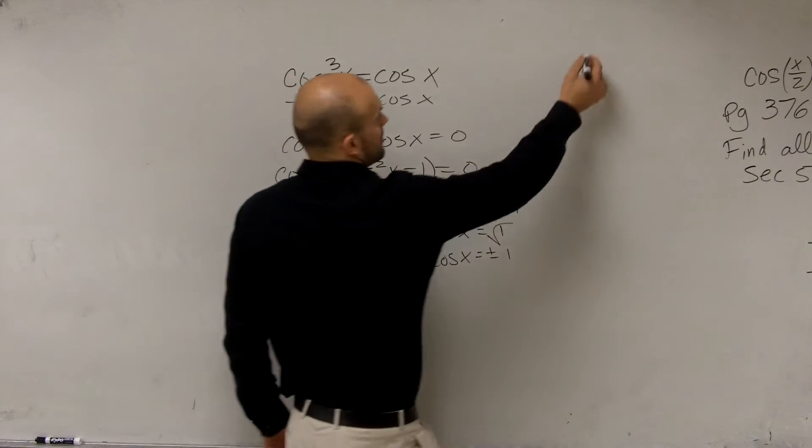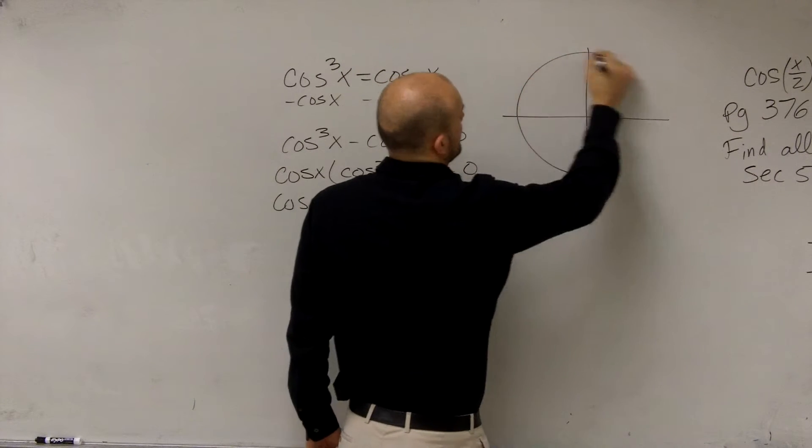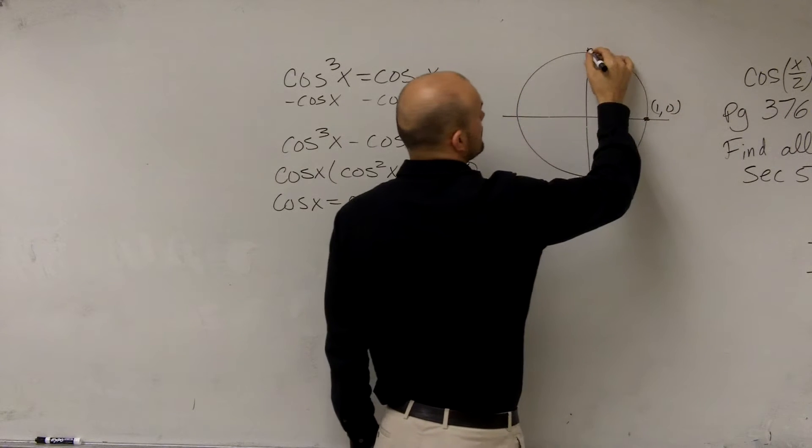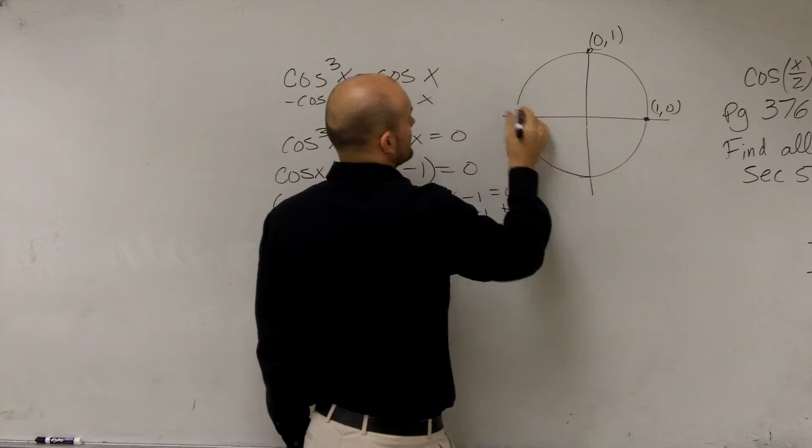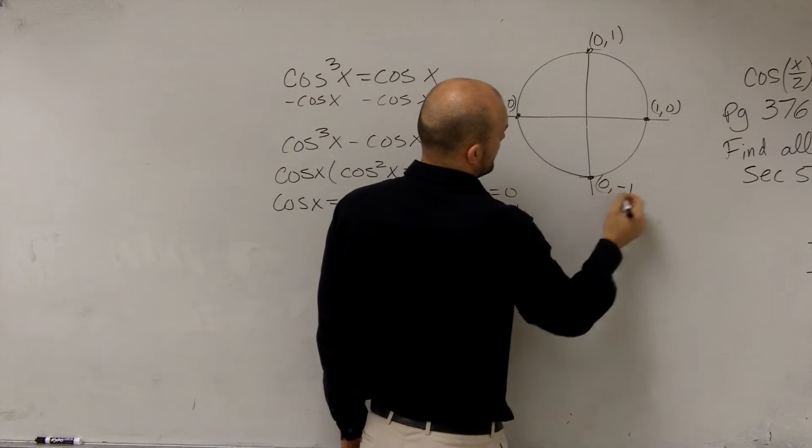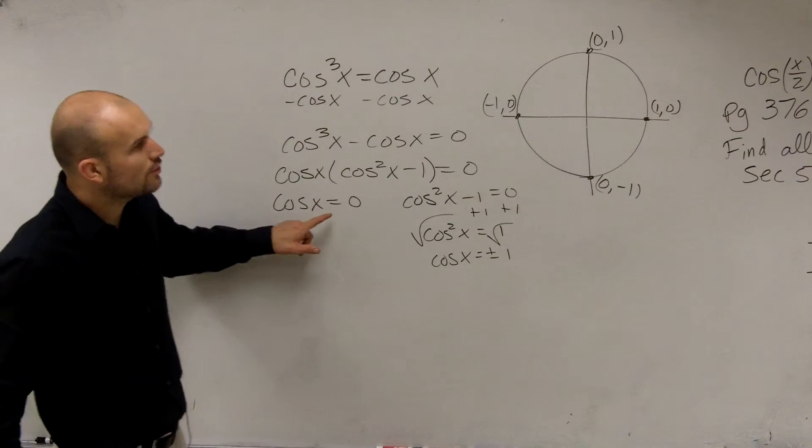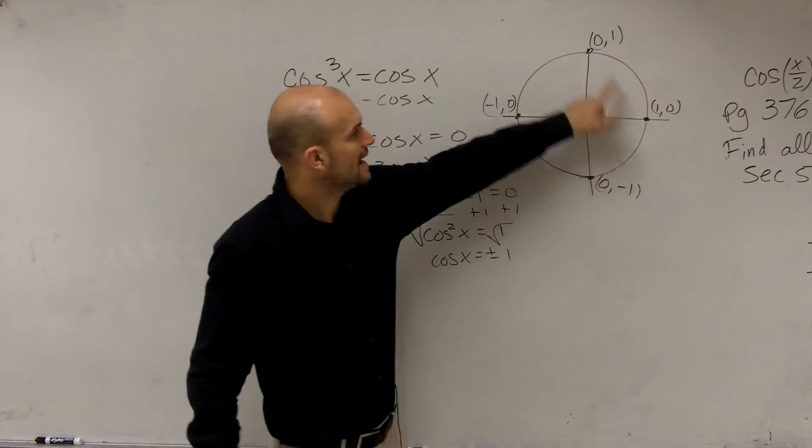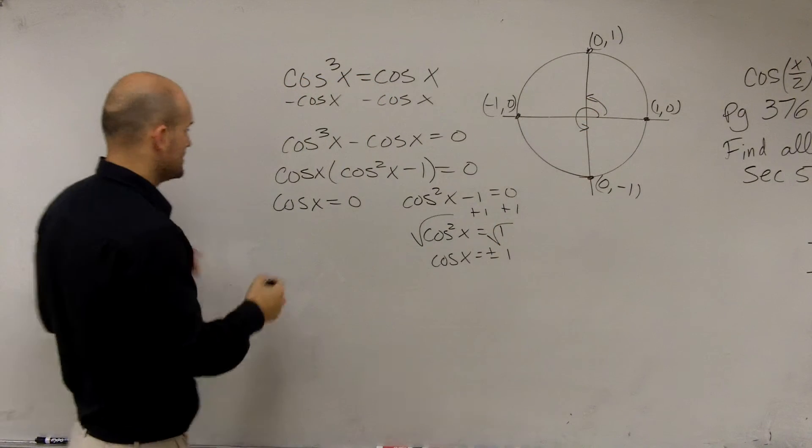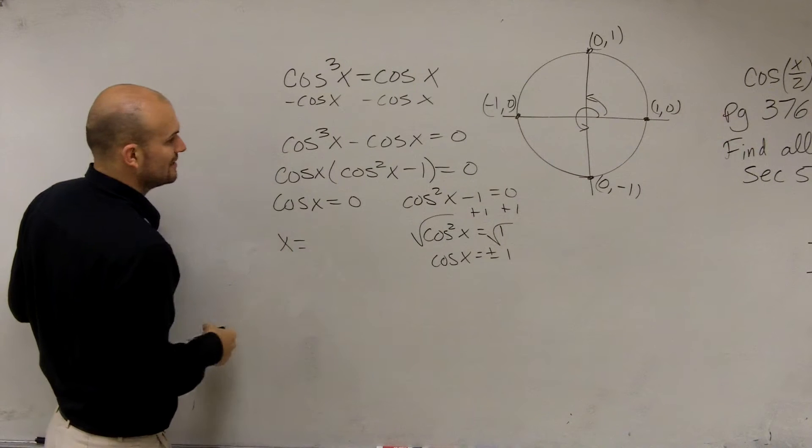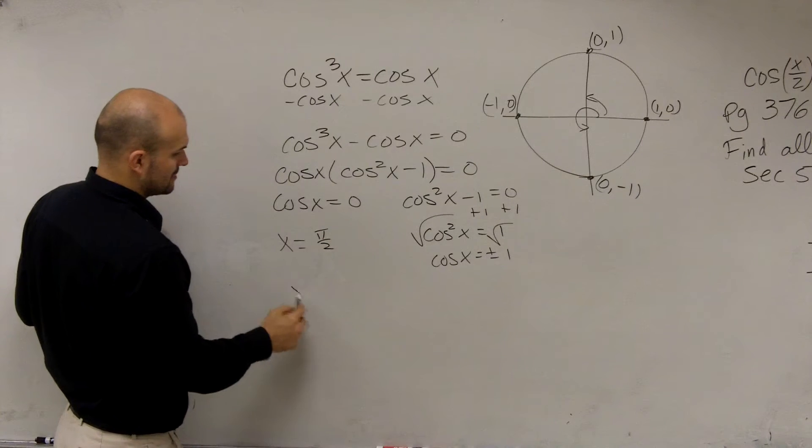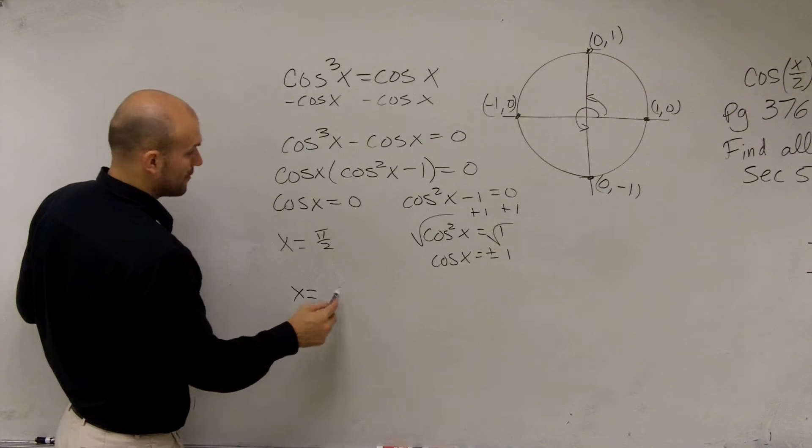Let's look at our main important points: (1,0), (0,1), (-1,0), and (0,-1). We can say that cosine equals 0 at my angle here and there. So the value of cosine when it equals 0 is when x = π/2 and x = 3π/2.